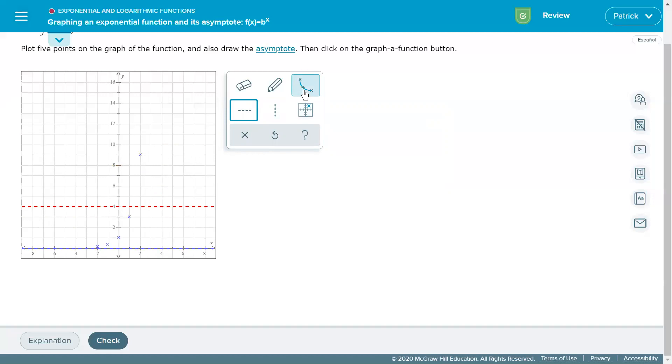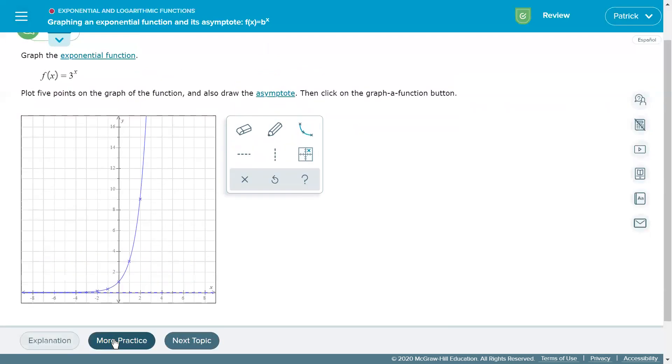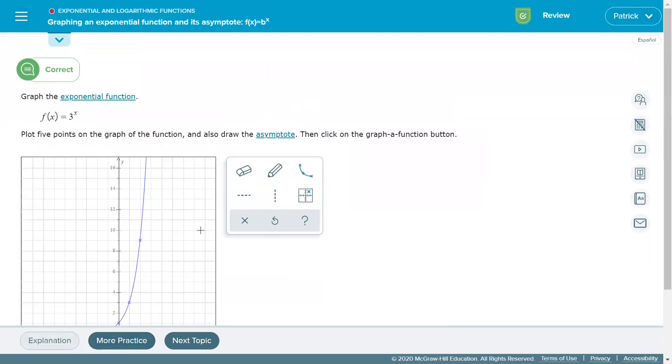Once we have that, we can click the draw a function button, which will look at the points we have and draw a nice curve through that. Check our work, and Alex is happy to tell us that that is the correct solution to this problem.